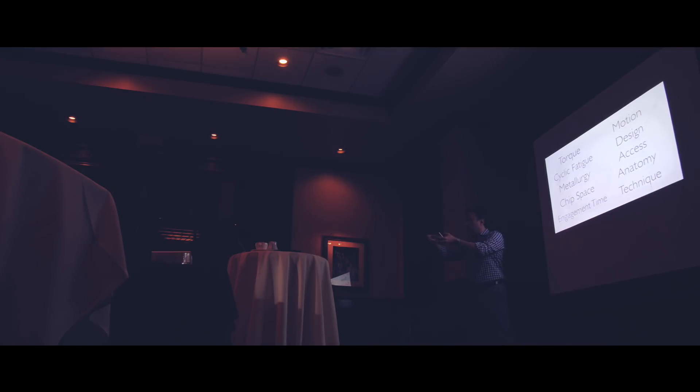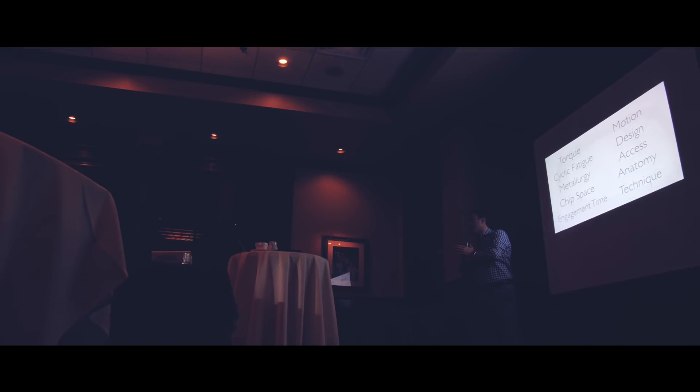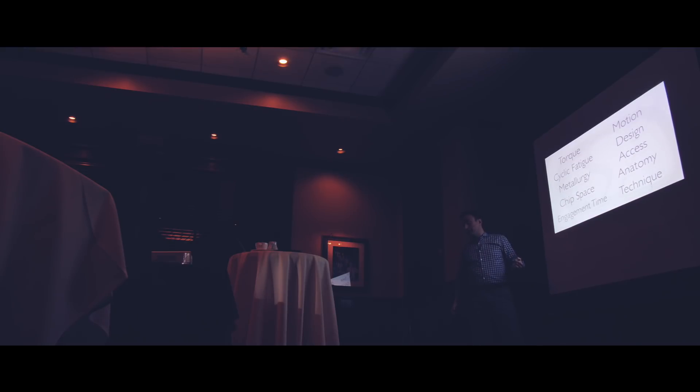Chip space is another very important concept. Think of a spoon — the area in the middle where you collect food — that's the chip space of a file. As the file cuts, it collects debris in that space. When chip space is full, pressure is exerted on the file and it starts to get torqued. Clearing the chip space is a critical ingredient for success and reducing the rate of file separation.